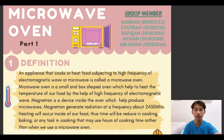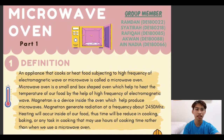Heating will occur inside the food, thus reducing the time needed for cooking, baking, or any other cooking tasks that may otherwise take hours. There are three characteristics that allow a microwave oven to cook: metal, glass, plastic, paper, and any other similar materials that can be used to contain food absorbed by microwaves.